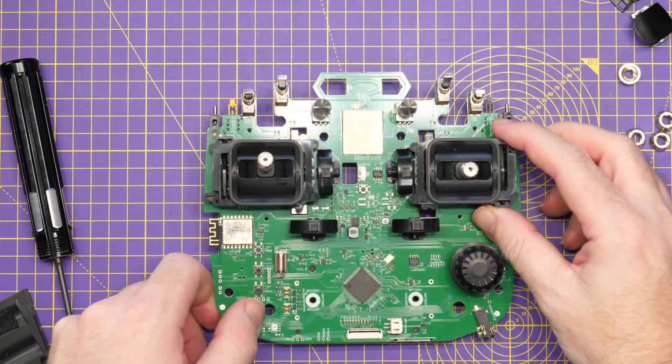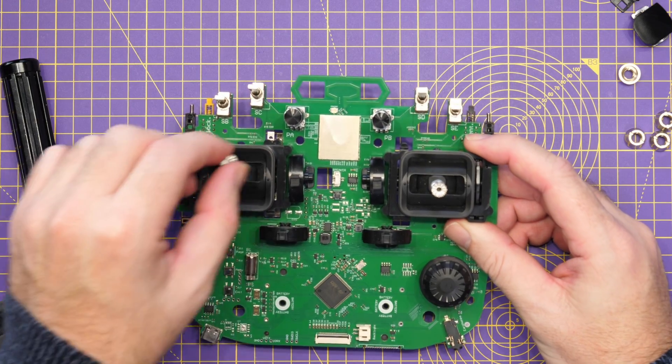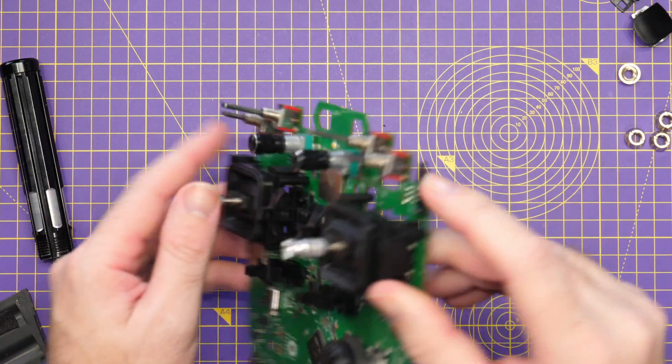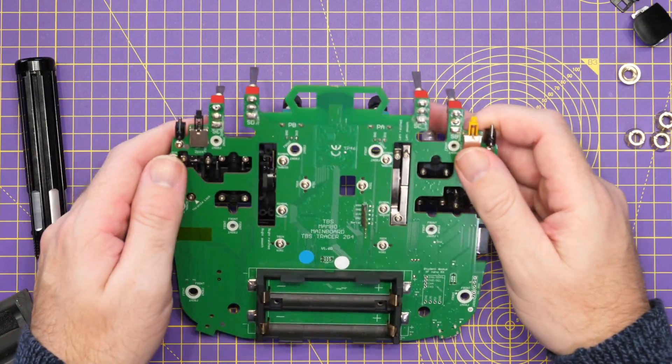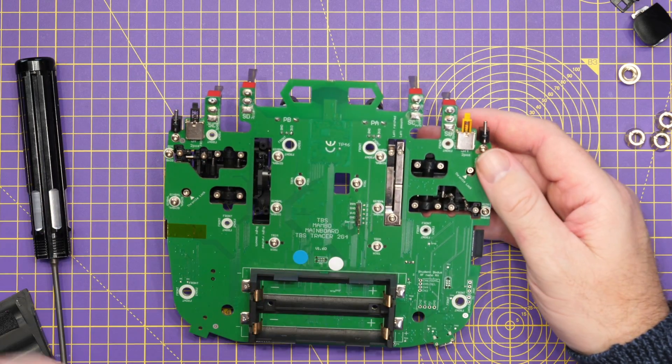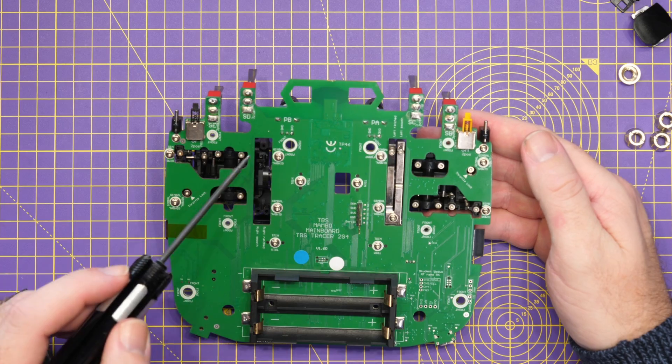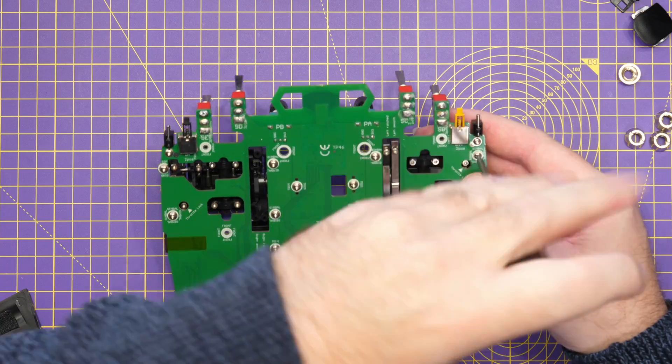And then that leaves the inside of the radio, the main PCB with our gimbals pre-attached. Now these again on this side have screws that hold them in place. So we can see that they're labeled up. You've got gimbal, gimbal, gimbal, gimbal. So four screws, gimbal, gimbal, gimbal, gimbal.